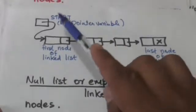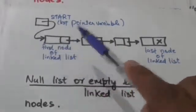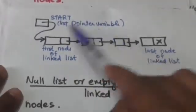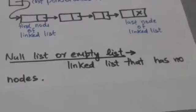In this diagram, 'start' is a list pointer variable. If a linked list doesn't contain any node, then it is called a null list or empty list. It is denoted by a null pointer in the list pointer variable. Thank you very much.